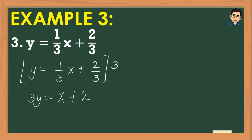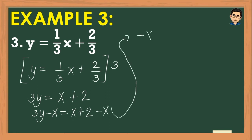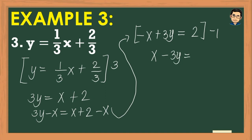We need to transfer x to the left side, so we subtract x from both sides: 3y - x = x + 2 - x, giving us -x + 3y = 2. Since the coefficient of x must be positive, we multiply the whole equation by -1: (-1)(-x) = x, (-1)(3y) = -3y, (-1)(2) = -2. Our final answer is x - 3y = -2.